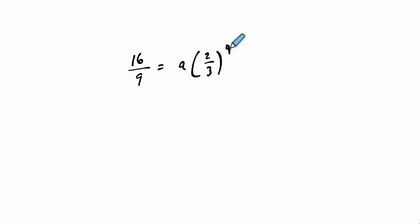16 over nine equals A times two thirds to the fourth. If we solve this, I'm going to take the fourth power of two thirds. Two to the fourth is 16. Three to the fourth is 81 times A equals 16 over nine. And we want to solve for A, so I'm going to multiply both sides by the reciprocal of 16 81 firsts, so 81 over 16, and then over here, 81 over 16, and those cancel. And over here, 16s cancel, and 81 over nine is the value of the starting term, so A is nine.